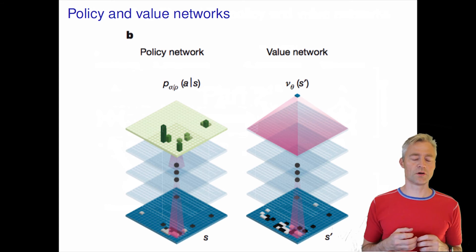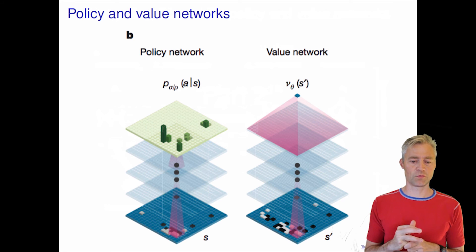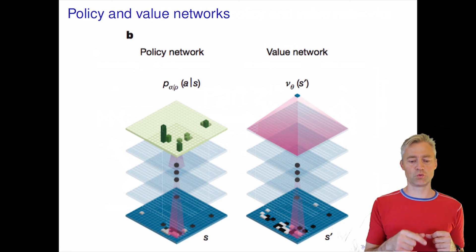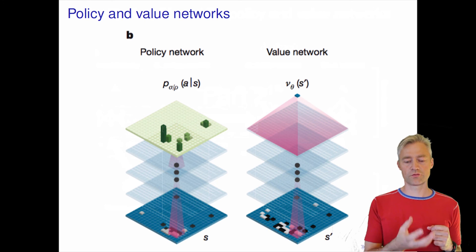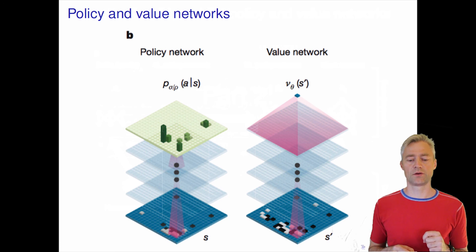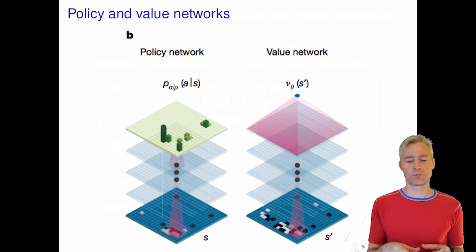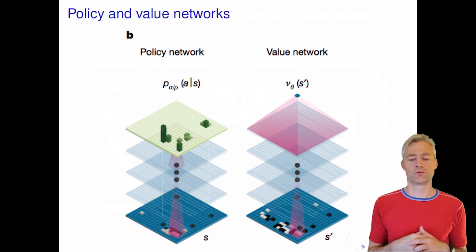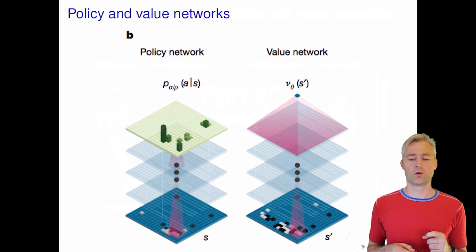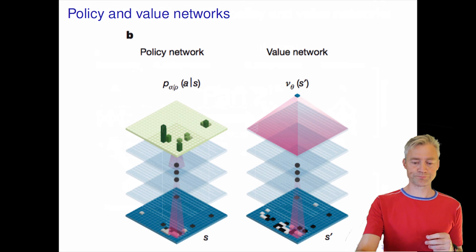Here is an illustration of the policy and value networks. The policy networks — both the supervised learning and reinforcement learning versions — take the board position at a certain time instance, shown in dark blue at the bottom, as input to a neural network. For each possible action, meaning each place where the player can place their next stone, it outputs a probability, implemented as a softmax over all positions on the board. The value network produces a single number: the probability, given the board position, that white will win, which is a number between zero and one.